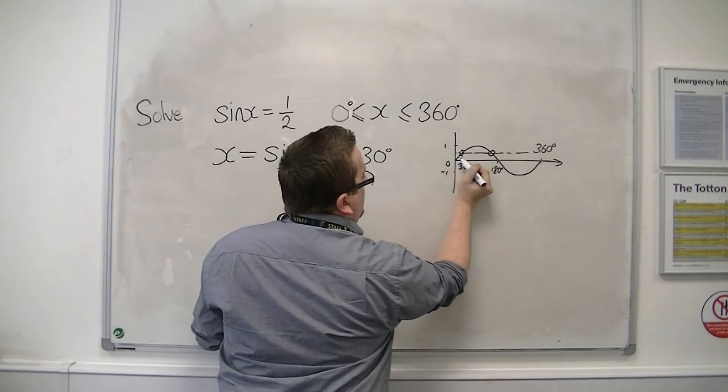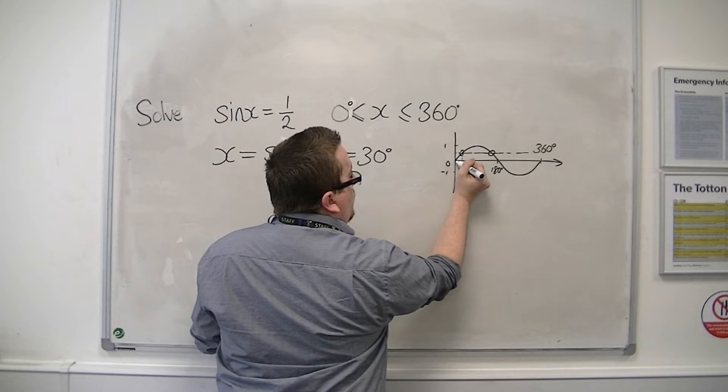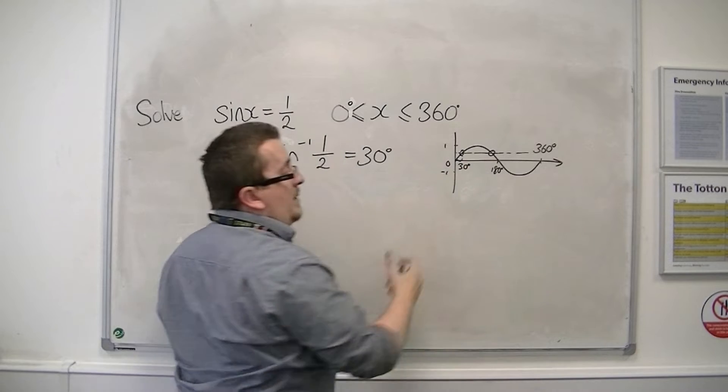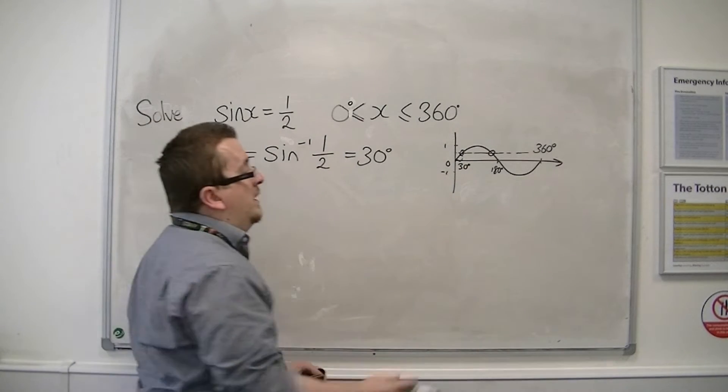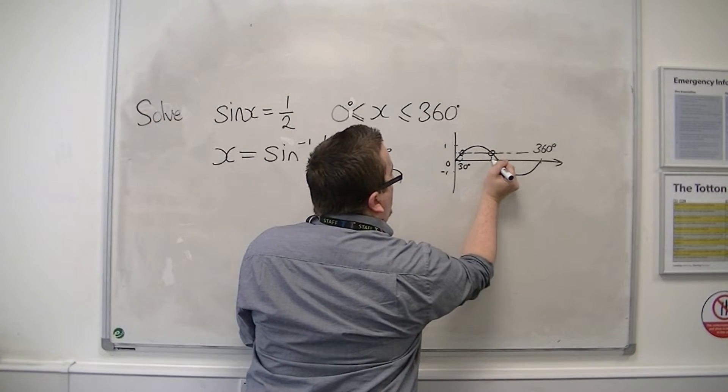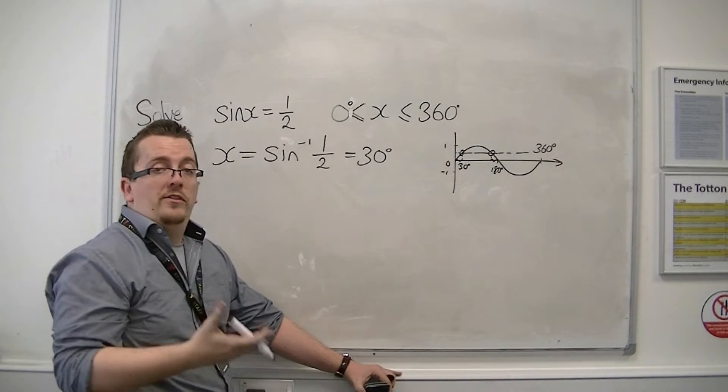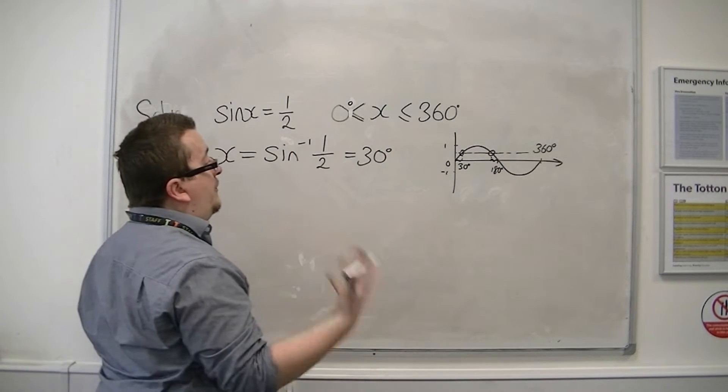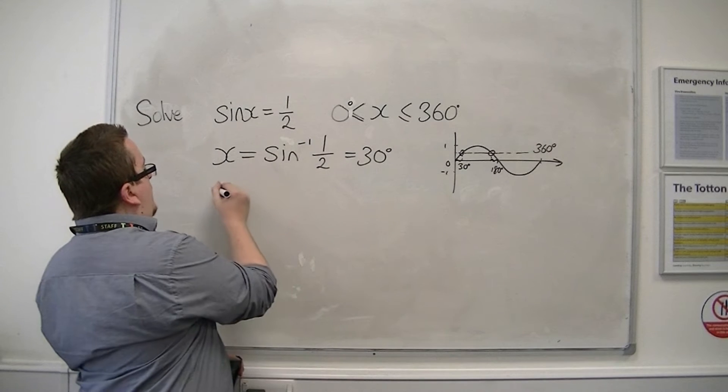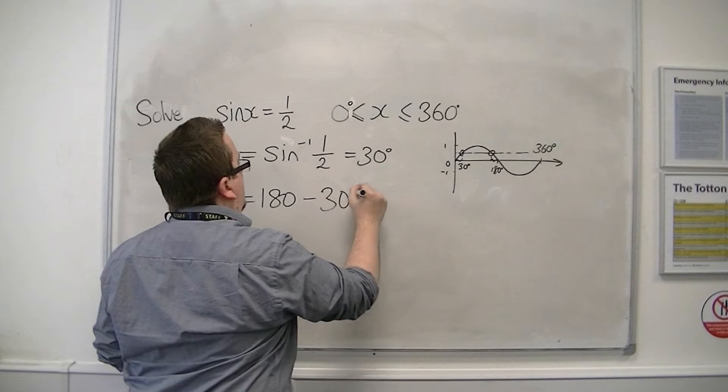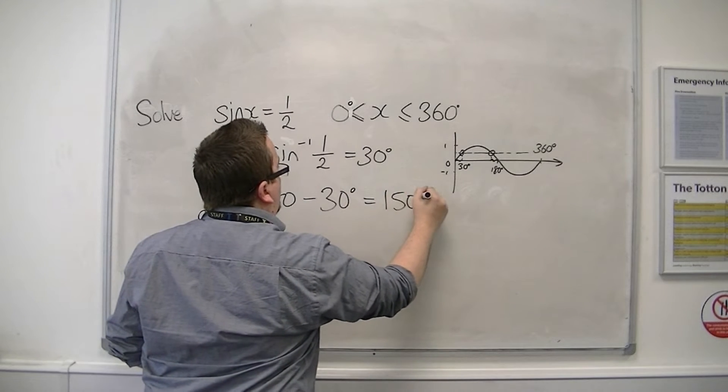The second solution can be found by thinking, well, between 0 and the first solution is 30 degrees. And because of the symmetry of the curve, this distance between our second solution and 180 is also going to be 30 degrees. So the second solution can be found by subtracting this number from 180.